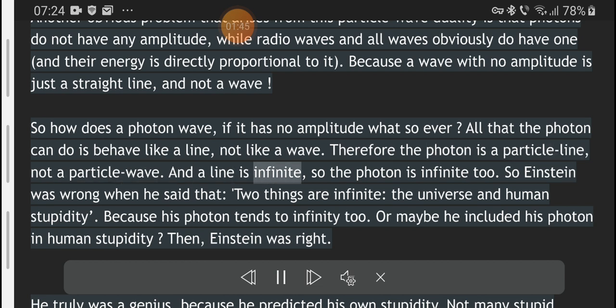And a line is infinite, so the photon is infinite too. So Einstein was wrong when he said that two things are infinite, the universe and human stupidity. Because his photon tends to infinity too. Or maybe he included his photon in human stupidity.